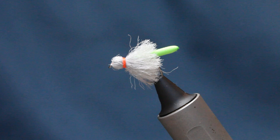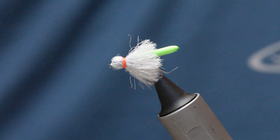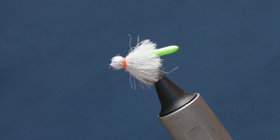The popularity all over the world of a method called the duo, New Zealand style, clinch and dink - call it what you will - is a way of usually using a dry fly to suspend a nymph.